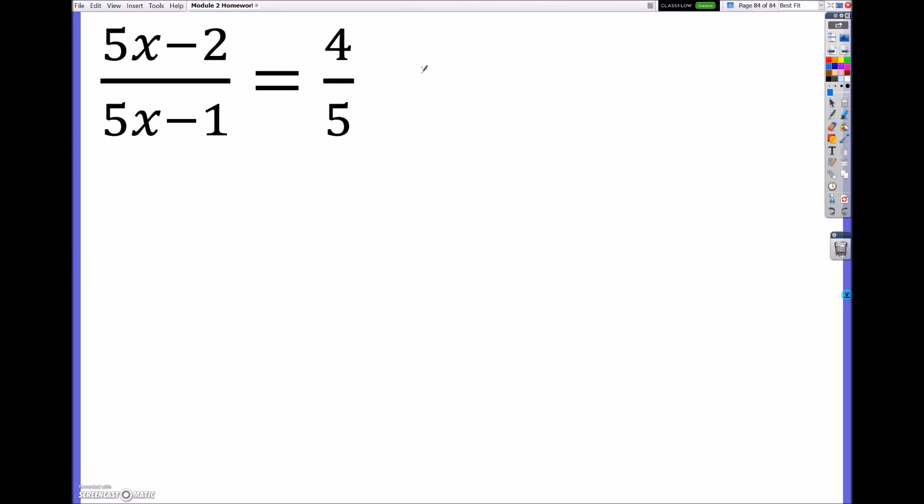All right, and the last one looks a little bit more complicated, but same idea. What we're going to do is cross multiply. So here on the left side, I'm going to have 5, this 5, times 5x minus 2. And now I'm going to write it in red. I'm going to cross multiply this, 5x minus 1 to the 4. So I'm going to have 5x minus 1 times 4.